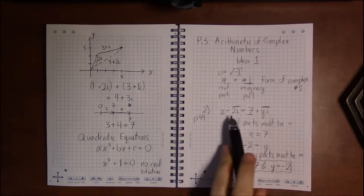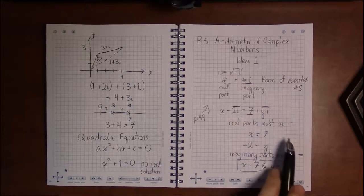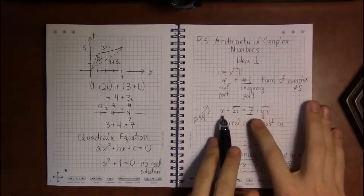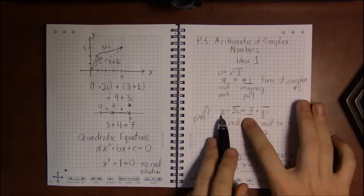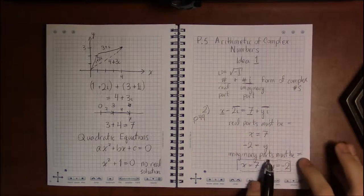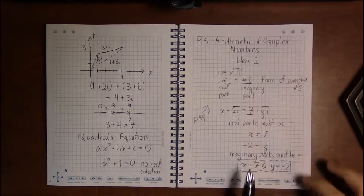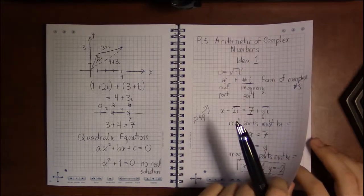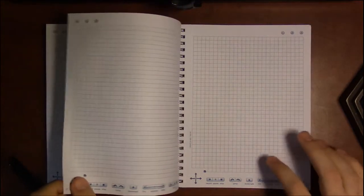So now that we know what equals means in complex numbers—namely that two complex numbers are equal if their real parts are equal and their imaginary parts are equal—now we can talk about what does it mean to add two complex numbers.